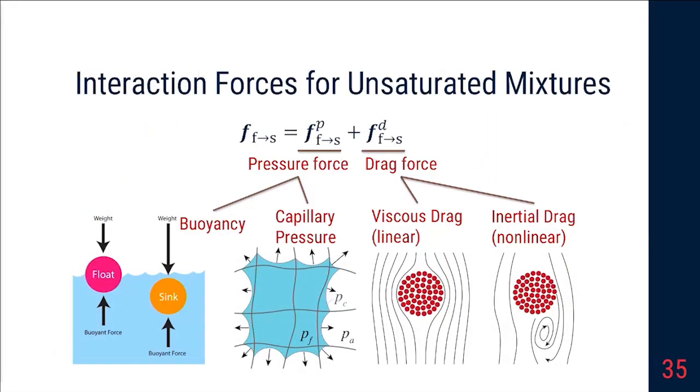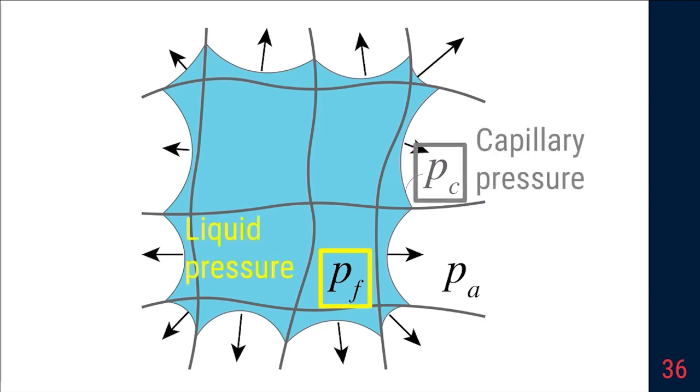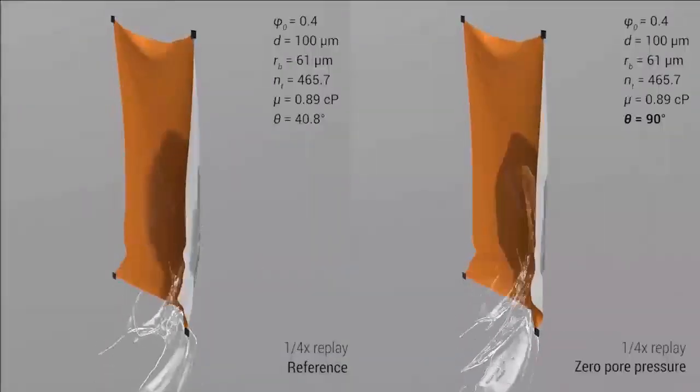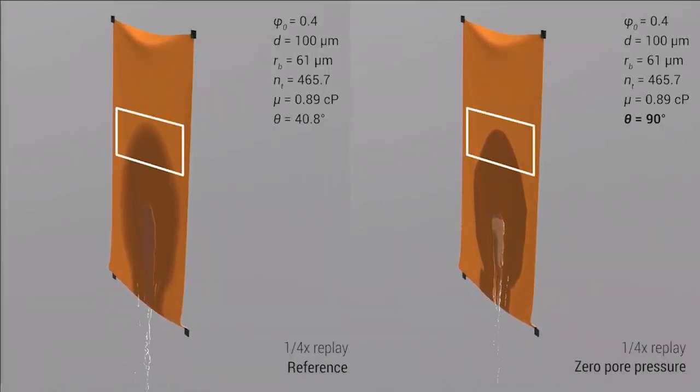For unsaturated mixtures, additionally, the pressure force also includes capillary suction. Here, the capillary pressure is simply the difference between the liquid pressure and the air pressure. We demonstrate the effect where zero pressure is applied when the contact angle is 90 degrees. There is no wicking effect, and the liquid is less attracted to the cloth.